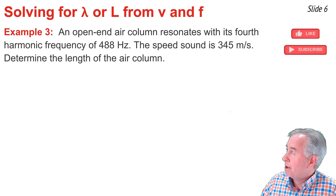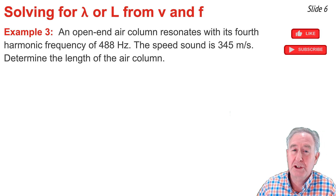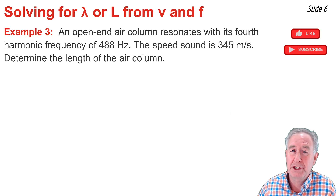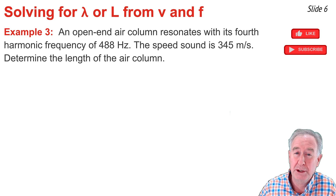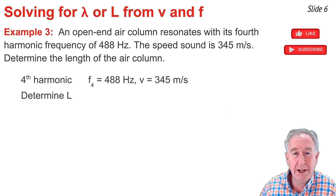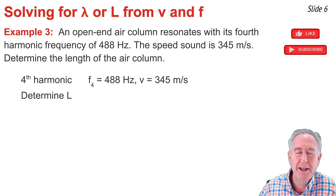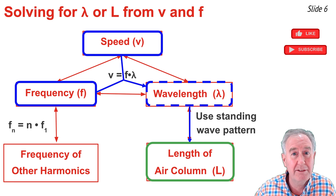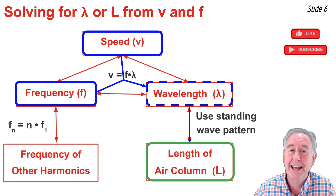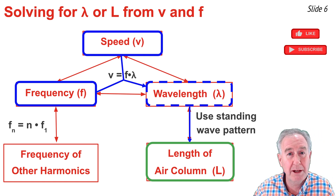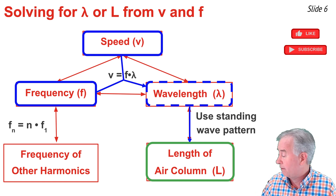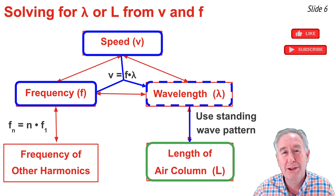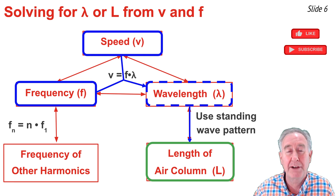In Example 3, I'm given an open-end air column resonating at its fourth harmonic, with a frequency of 488 Hz and the speed of waves within the air column at 345 m/s. I write down what I know and what I'm looking for: the length of the air column. Using my problem-solving strategy, I know the speed and the frequency, so I can use v = f × lambda to calculate the wavelength. Once I have the wavelength, I can use the standing wave pattern to find the length.